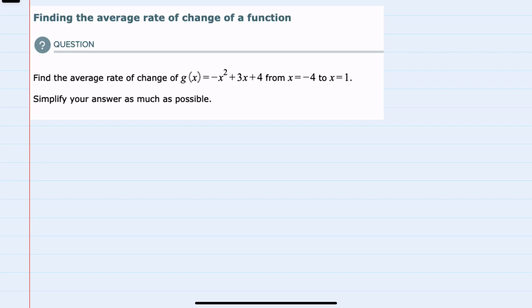In this video, I'll be helping you with the problem type called finding the average rate of change of a function. We're given the function g(x) and asked to find the average rate of change between x equals negative 4 and x equals 1.